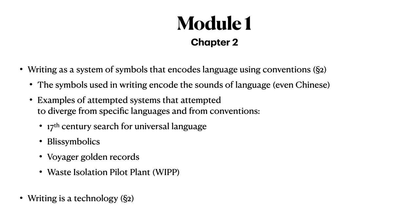We will examine case studies of proposed systems that attempted to diverge from specific languages and existing conventions. Specifically, we will consider attempts during the 17th century to find a universal language, the 20th century system of bliss symbolics, the system of symbols etched on the cover of the Voyager golden records, and the attempts to devise symbols to warn humans in the far future of the dangers of buried nuclear waste.